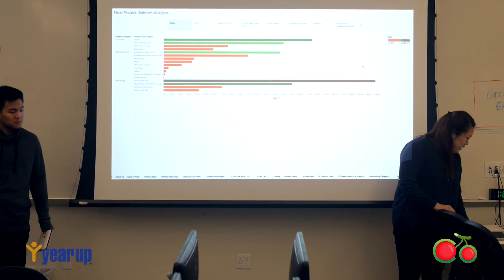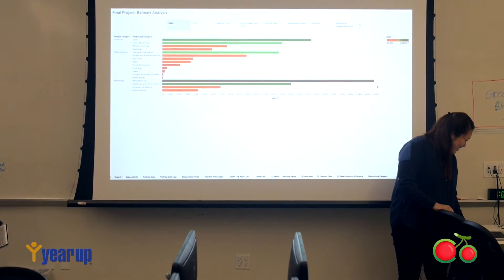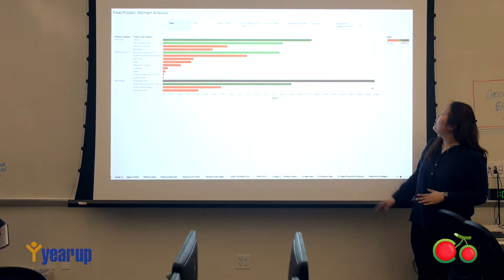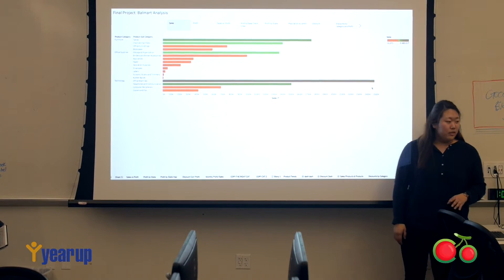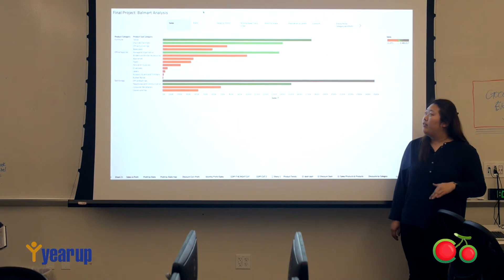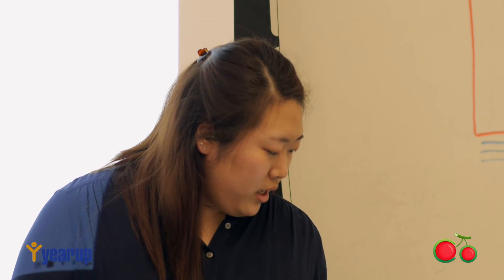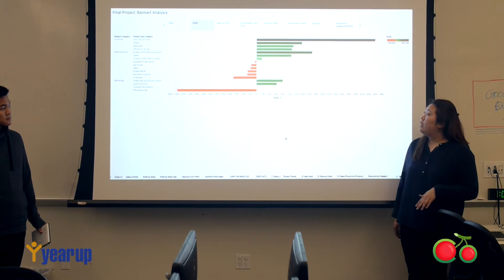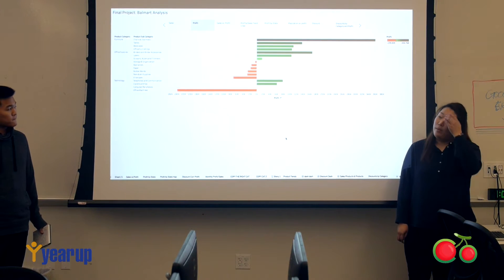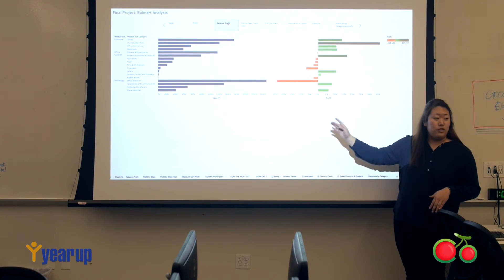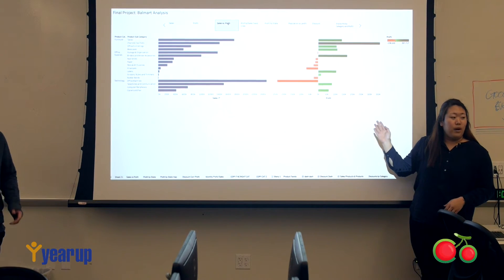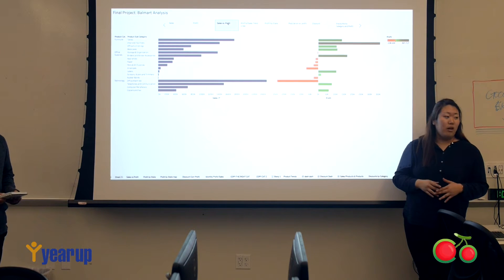We showed it through a graph using a red and green scale — the more you sell, the greener it gets, and the less profit or negative profit, it will turn red. To compare the two, we put them side-by-side for easier visualization, because as you can see, a lot of the products do sell well, but when you compare it to the profit, some items that tend to sell well aren't making any profit.